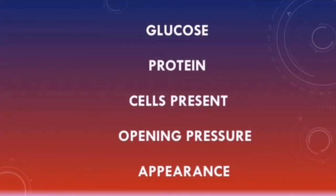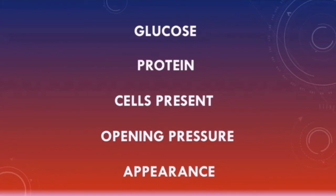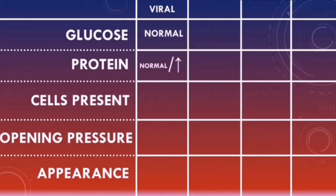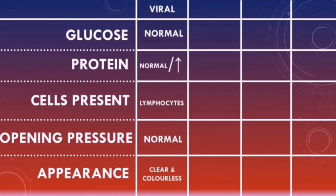Let's now summarize the CSF profiles for the different types of meningitis. In viral meningitis, the CSF glucose is normal, and the CSF protein levels are usually normal or raised. The predominant cell type present is the lymphocyte, the opening pressure is normal, and the CSF usually looks clear and colorless.